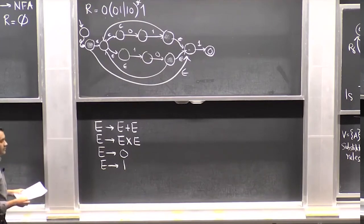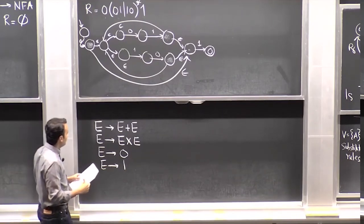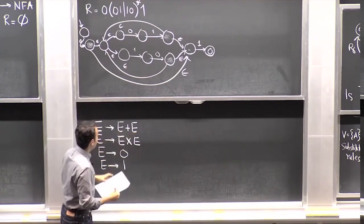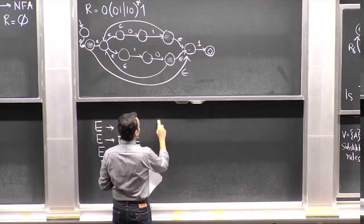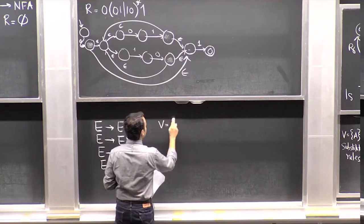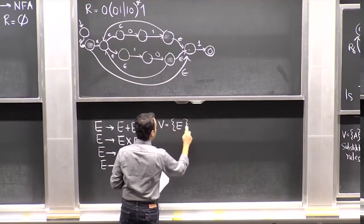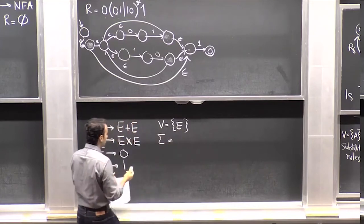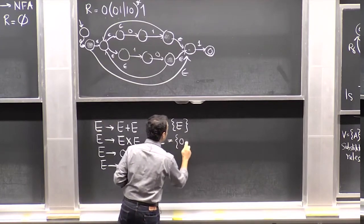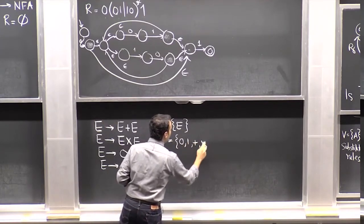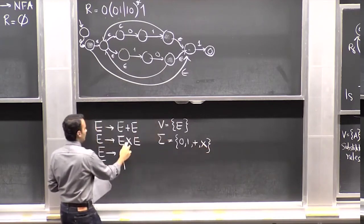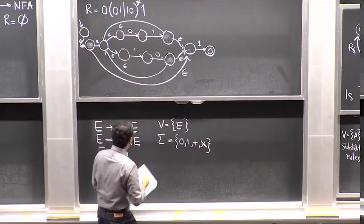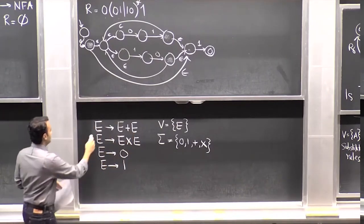Here's another example of a context-free grammar. The variable E can be replaced with E times E, E plus E, zero, or one. The set of variables is just {E}, the alphabet is {0, 1, +, ×}, the start symbol is E. What kind of strings can you generate using these rules?